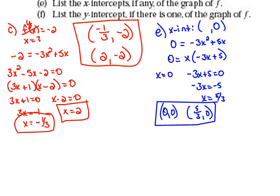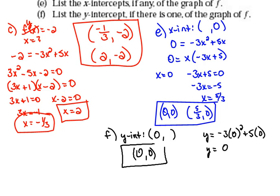Part F says that we're supposed to find the y-intercept. And again, what do we know about every single y-intercept? Well, the x value has to be 0. So our equation was y equals negative 3x squared. So I'm going to put in a 0 in place of x plus 5 times, instead of x, we're going to put 0. So when we solve that, y will equal 0. So our y-intercept is the point 0, 0 also.